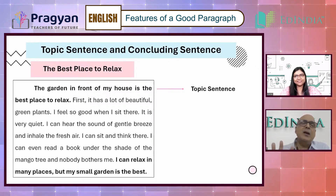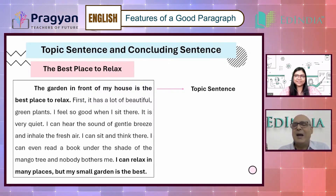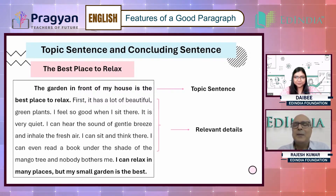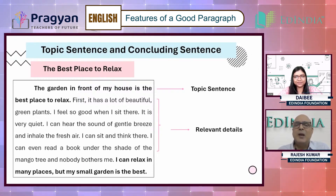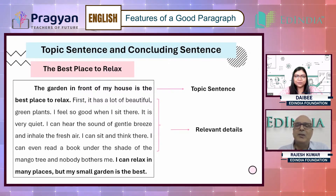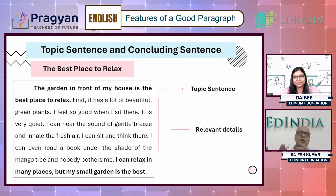It makes it very clear what the paragraph theme — your topic — is. And then after that, the next couple of sentences talk about the details: there are green plants, it feels good there, it's very quiet, there's a gentle breeze, fresh air, I can sit and think. So it's giving the details.